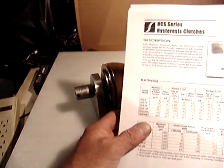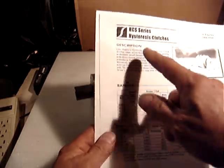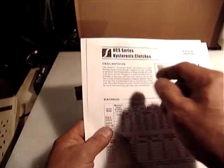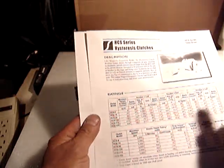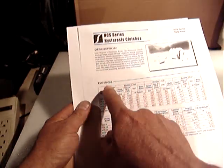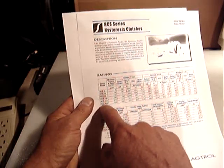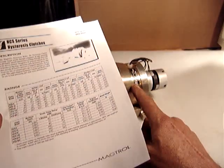I made another short video because I forgot to tell you about the data sheet for the HCS series hysteresis clutch made for Magtrol, which includes all the specifications and ratings up to the HCS 420. This is the HCS 500-2.